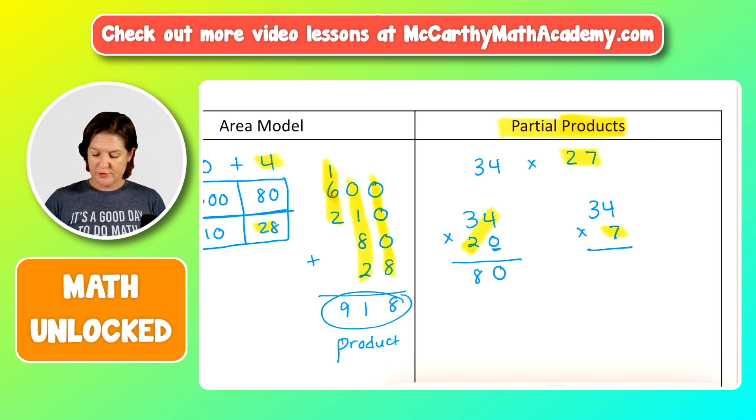And then two times three, or 20 times 30, we've got two, four, six, six. That would actually be 600. So 680 would be part of our product. Hence the name partial product.